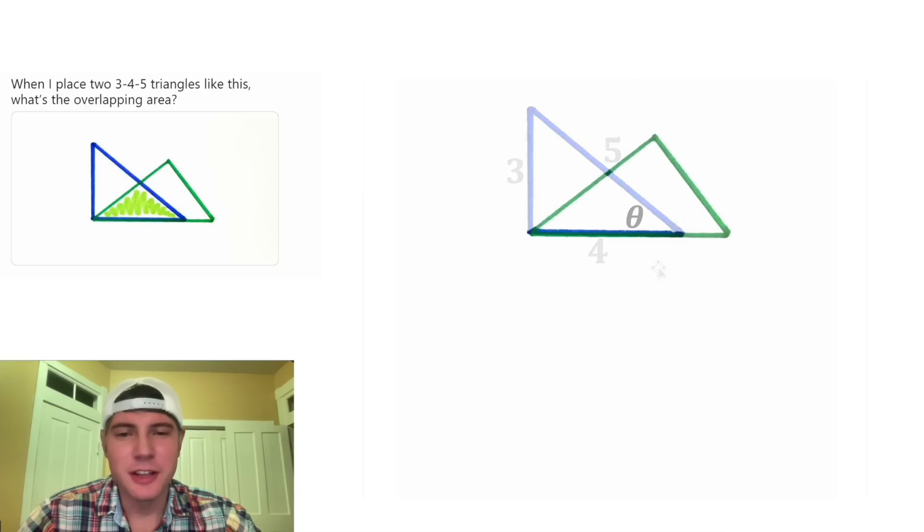And then let's focus on the green triangle. This looks like the smallest side, so it would be three. This one would be four, and this side would be five. And then once again, let's label the smallest angle as theta. And let's bring back our other triangle.